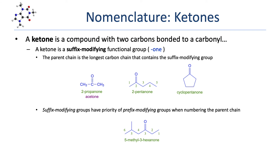Remember that all of the rules for naming suffix-modifying functional groups apply to ketones. For example, suffix-modifying groups have a numbering priority over prefix-modifying groups when numbering the carbon chain. In this example, we number the carbon chain starting on the right, because that is the side closer to the carbonyl. That places the methyl group on the fifth carbon of the six-carbon chain, so here we have 5-methyl-3-hexanone.